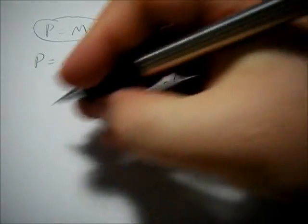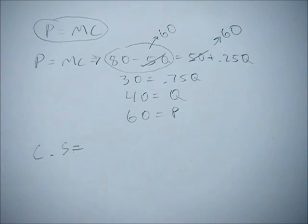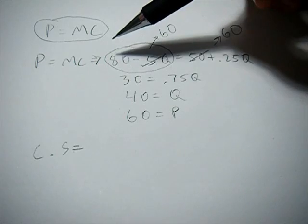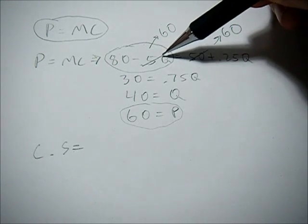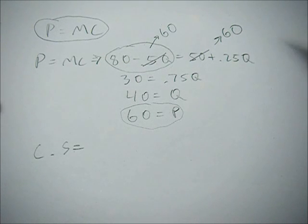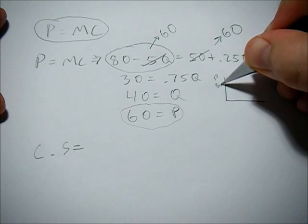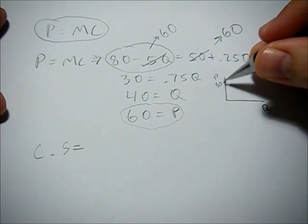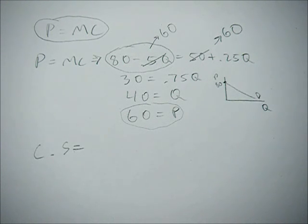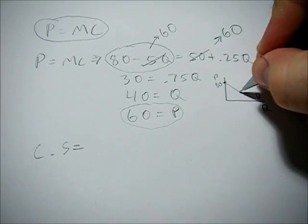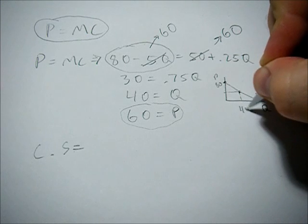So now we need to get consumer surplus. Remember consumer surplus is the area below the demand curve, but above the price. We now know the demand curve, or the inverse demand curve, and we know the price. So the easiest way to do this would be to find where the intercept on the price curve is going to be. And we can do that by setting Q equal to 0. So if Q is 0, price is going to be 80. So we know that if we were to draw a little graph, 80 is our intercept on the price axis, or the y axis. We then get the downward sloping nature of our demand curve, and we know it's linear, here. And we know what equilibrium price and quantity are, 40 and 60.